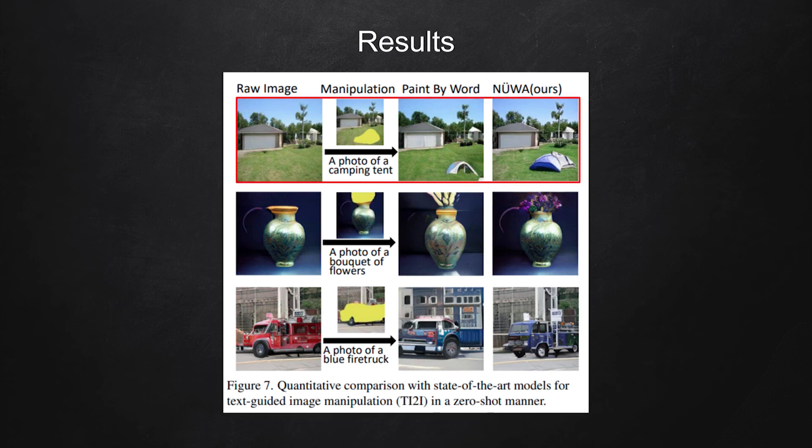We have an image that shows a backyard. It takes this image and a mask region colored yellow, and a sequence of text describing what it wants to do to this masked region: 'a photo of a camping tent.' The NEWA model tries to add a camping tent to this mask region. The final output is very good compared to another work, Paint by Word. The shape of the tent is blended in much better.